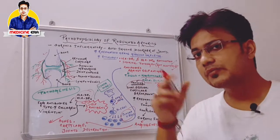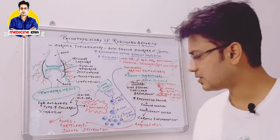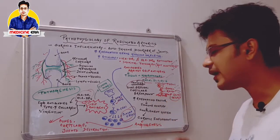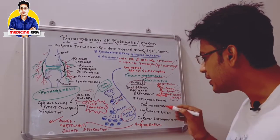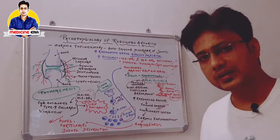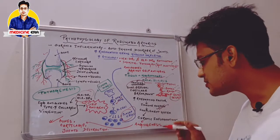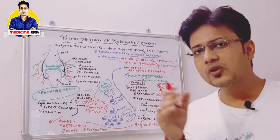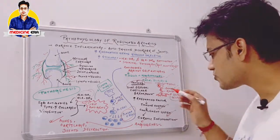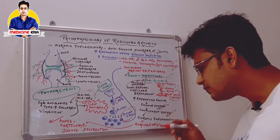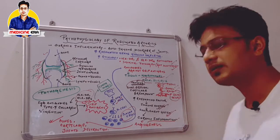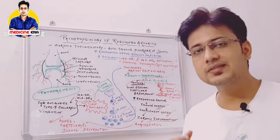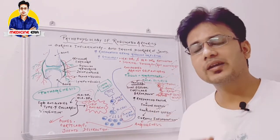So there are two main factors — pannus formation and osteoclast formation — responsible for bone degeneration. After that, the rheumatoid factor plays its role and forms the immune complex. This immune complex is responsible for the formation of the complement system, which is an important phenomenon in inflammatory responses. The complement system creates chronic inflammation in the joints.